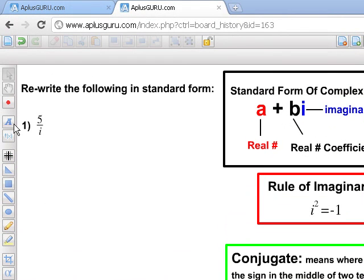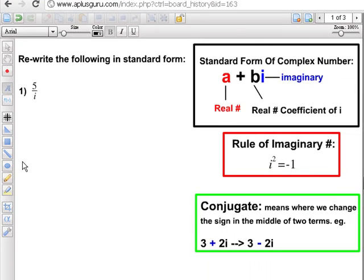Now, if you go back to our question, the denominator only has one term. You might have a question saying, how do we convert that into two terms?